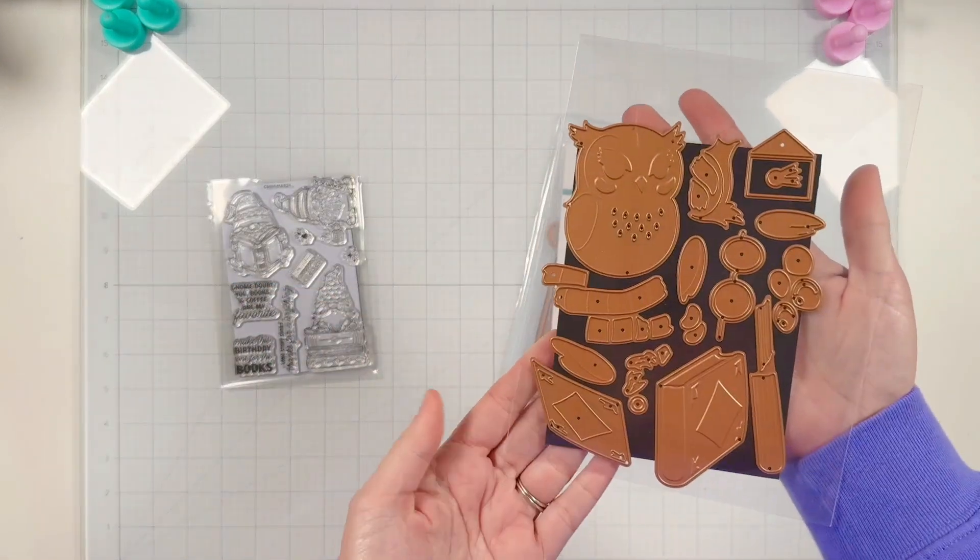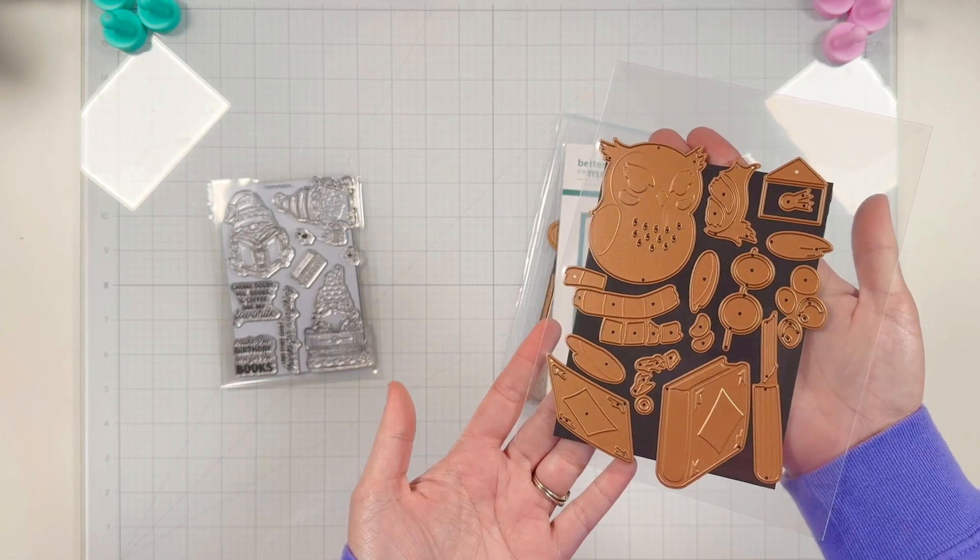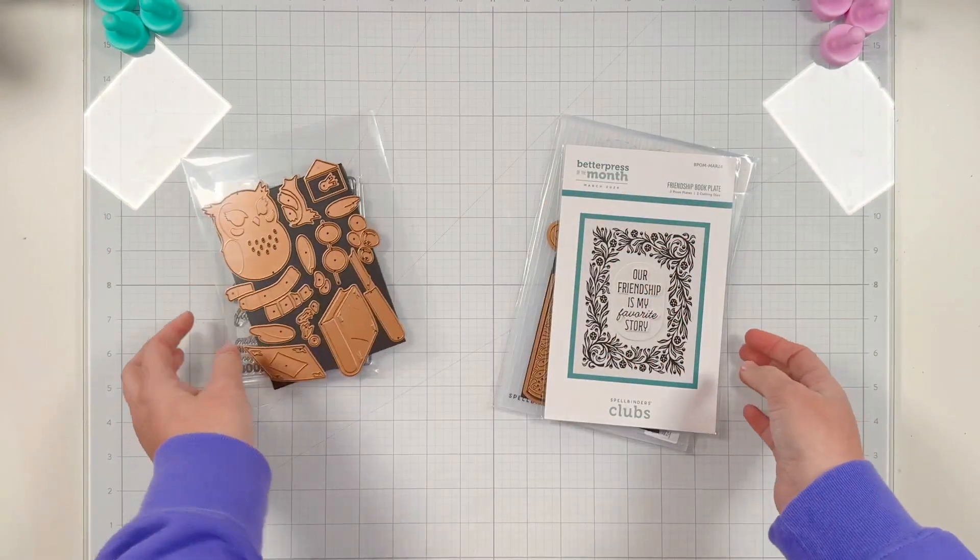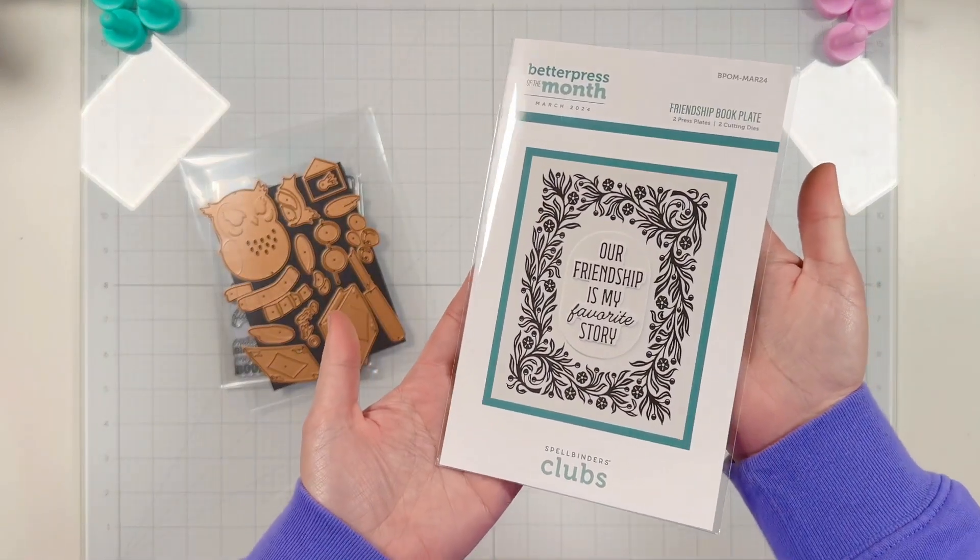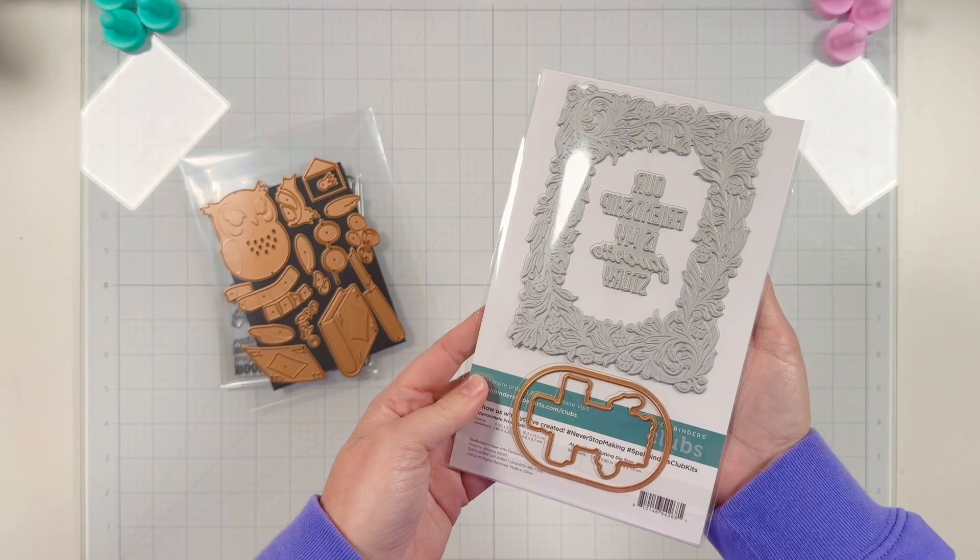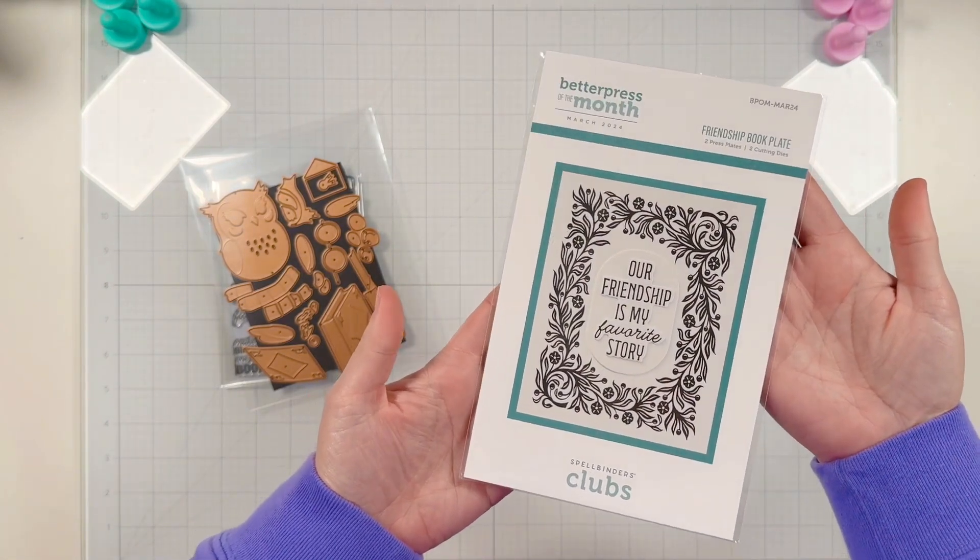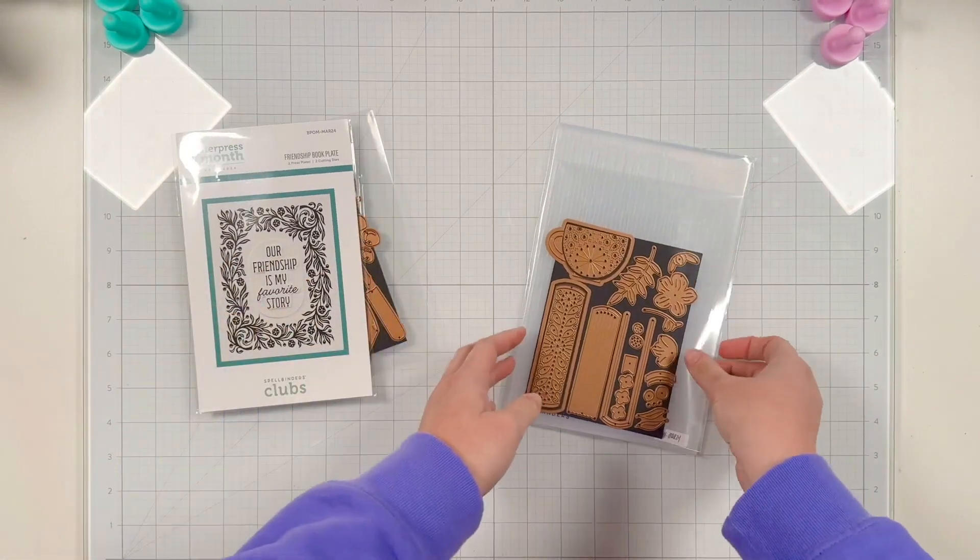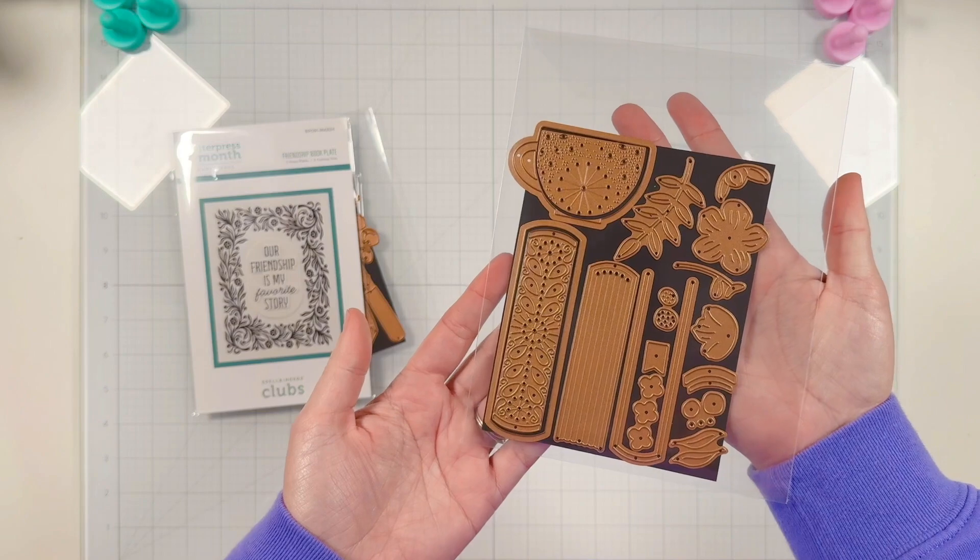So I have the clear stamp of the month, which has our little gnomes with their cup of hot beverage and books with adorable sentiments. I also have the small die of the month. I'm really excited to be joining that team with an owl and lots of book details. I also have the letter press plate of the month.